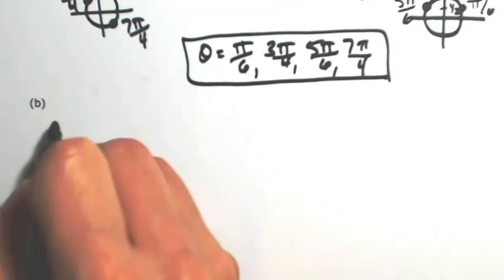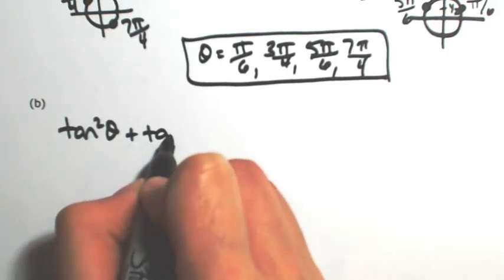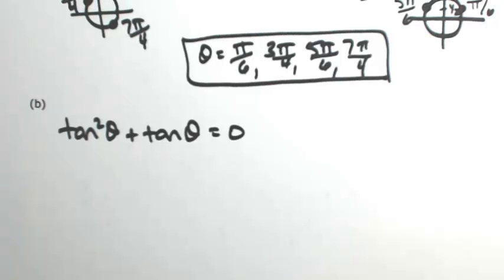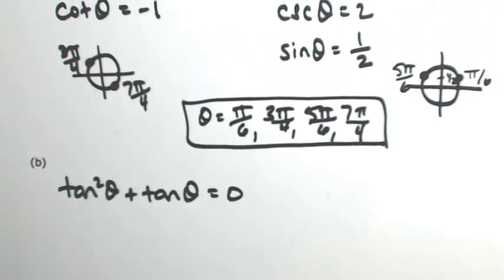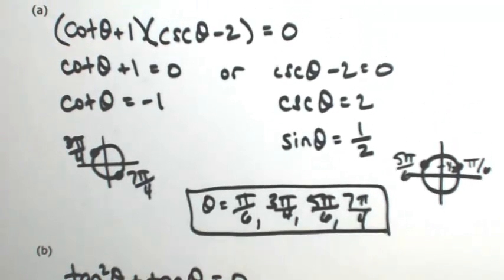Let's look at another one. See we have the tangent squared theta plus tangent theta equals 0. It's very similar to part A. We're set to 0, but notice that in part A it was factored.